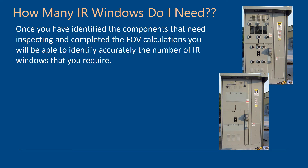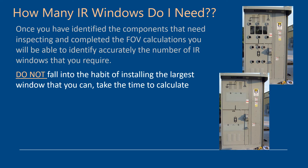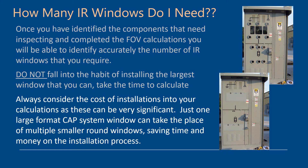Once you've identified those components and completed your field of view calculations in line with session five of this series, you'll be able to correctly identify the number of IR windows you require. Don't fall into the habit of just installing the largest window you can get — take the time to calculate. It will save you a considerable amount of money, and you can then determine whether you need multiple round windows or a large format window. For example, looking at these images, you're comparing 12 round windows versus two large format windows.